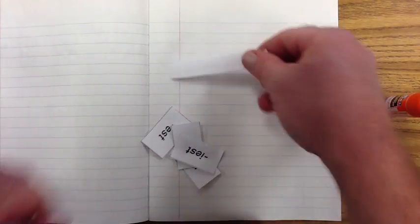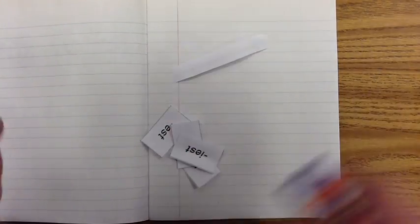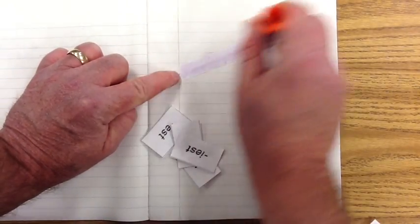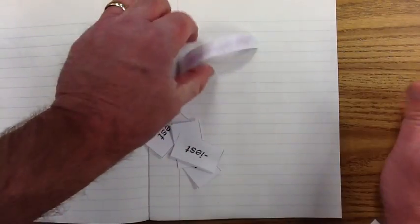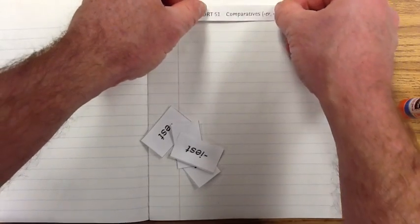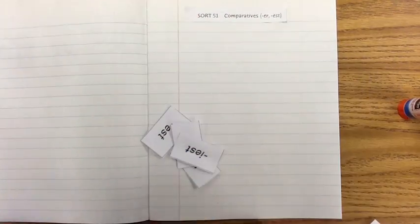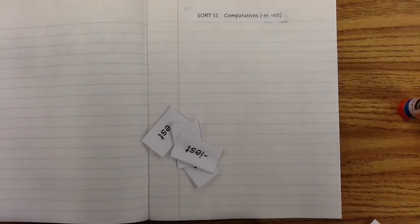As always, we take a moment and glue in our heading. So we're going to bead across that. Let's get that pasted at the top. By doing so, it keeps us organized. We know what this SORT is.